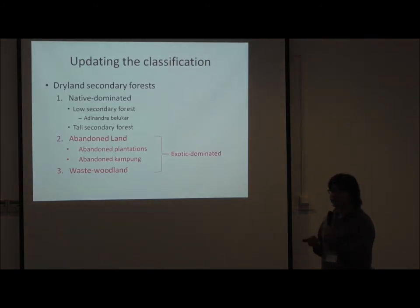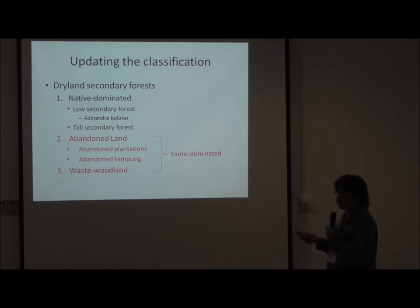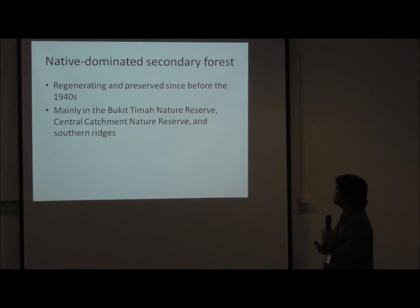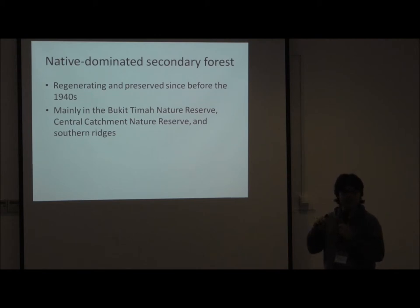Bearing species composition in mind, we propose an updated classification — a native-dominated forest that encompasses both low secondary and tall secondary land, and a wasteland type that is mainly exotic-dominated. The native-dominated forests are mainly centered in the Central Catchment Nature Reserve.